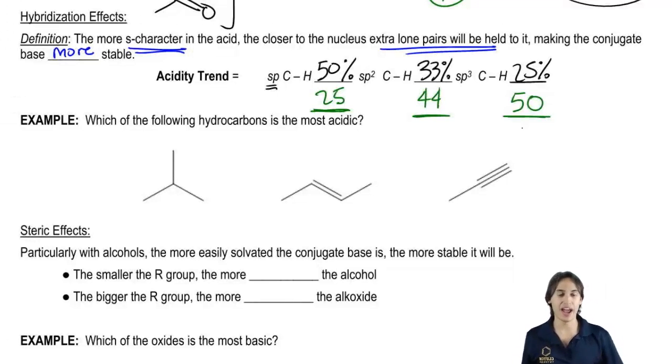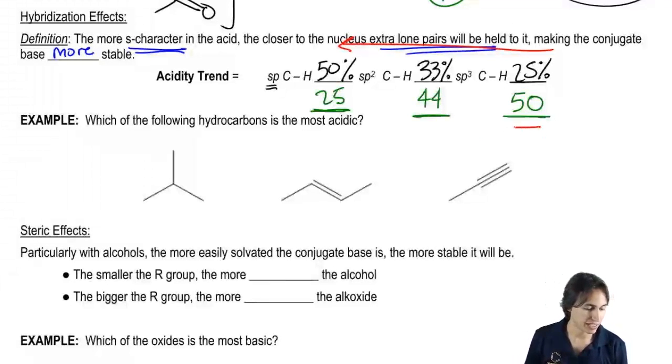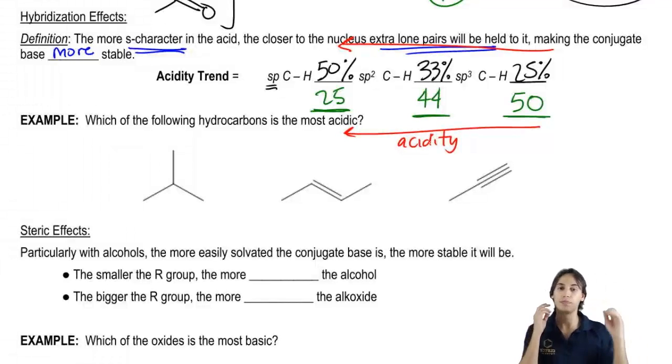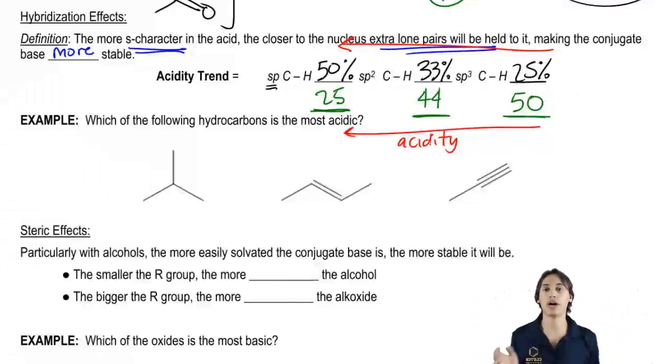You can see how as my S character gets higher, as my S character is increasing, my acidity is also increasing. Does that make sense? As your S character is getting bigger, the amount of the whole hybrid orbital that is S, the more acidic you get.